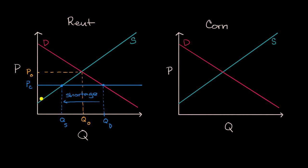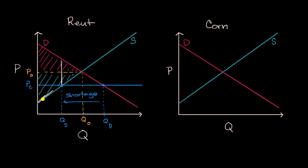Let's think about what's happening to the total surplus. When we let the market get to an equilibrium price and quantity, let me draw separately the consumer and the producer surplus. This was the consumer surplus right over here before the government intervention, and then this is the producer surplus. But now what happens when we have this price control? Well, if this is the quantity supplied, all of a sudden the total surplus shrinks. The total surplus is now being depicted by this white trapezoid.